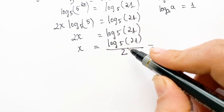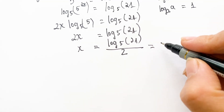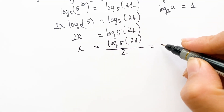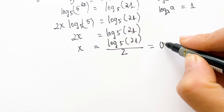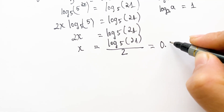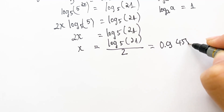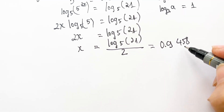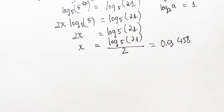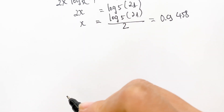Next, you can use a calculator to find the value. So x is approximately equal to 0.9458.